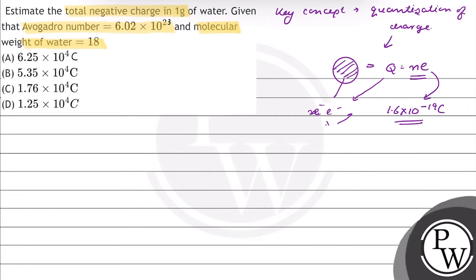In this question we're given that Avogadro number Na equals 6.02 × 10^23, and we need to find the total negative charge in 1 gram of water.